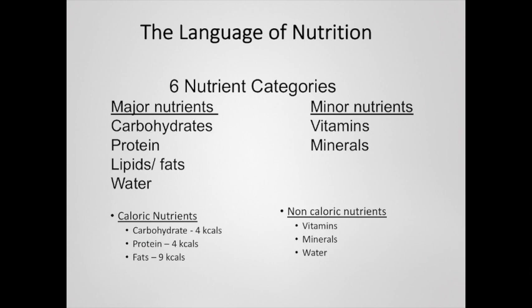The caloric nutrients have different amounts of energy available from them. Carbohydrates and proteins each have four kilocalories per gram and fats have nine kilocalories per gram. This is why you sometimes hear that fat has more calories than protein or carbohydrates — because it contains more per gram than those nutrients.